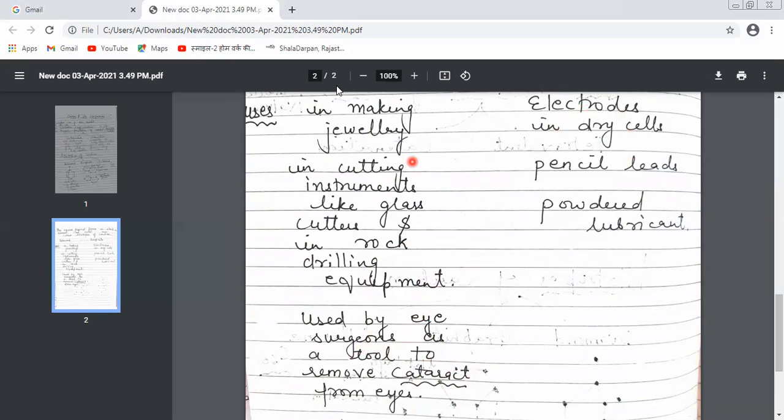Now let's go to graphite. The first important use is pencil lead, which is graphite. It is a powdered lubricant - very soft and slippery to touch, as we discussed in the structure. It's also used as electrodes in dry cells.